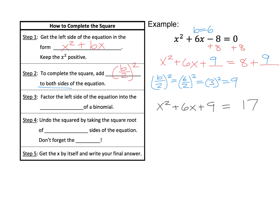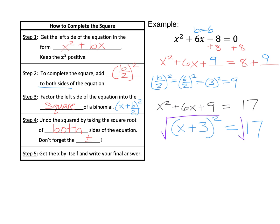Now we're ready to factor the left side of the equation into the square of a binomial. Remember, that square is just x plus b over 2, quantity squared. So here that's x plus 6 over 2, so x plus 3 quantity squared equals 17. Now that we have it as a binomial squared, we can undo the squared by taking the square root of both sides of the equation. Don't forget the plus or minus — when we solve with square roots, we need plus or minus to get both answers. The square and the square root cancel each other out, leaving us with x plus 3.